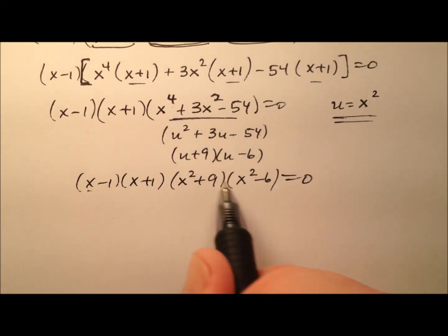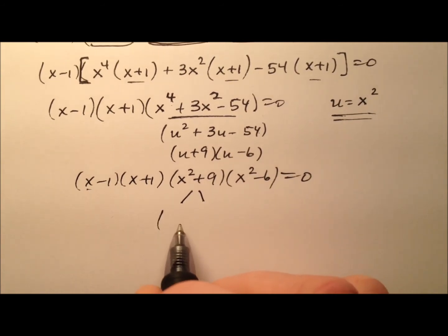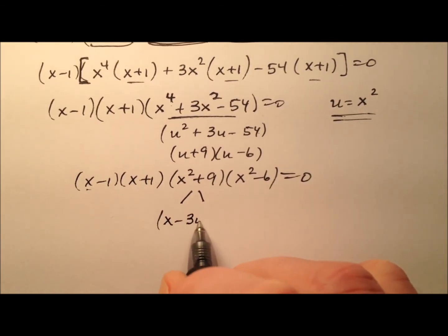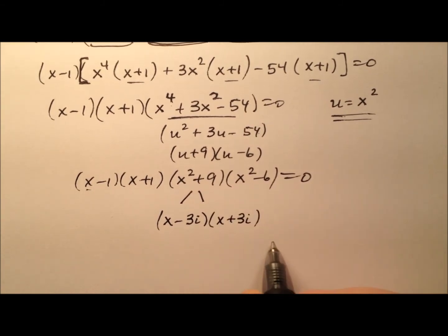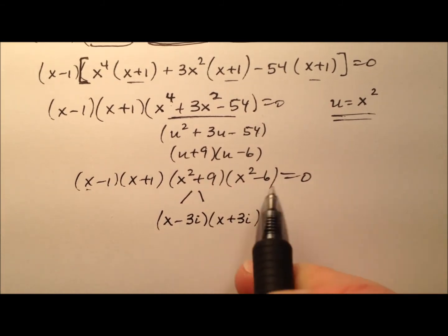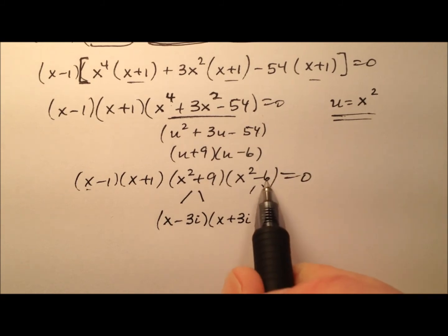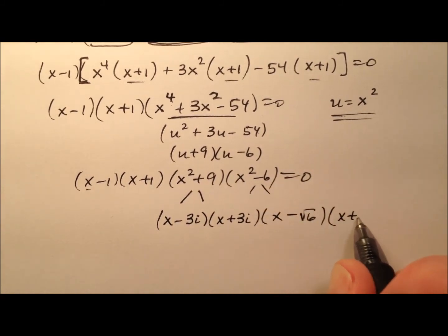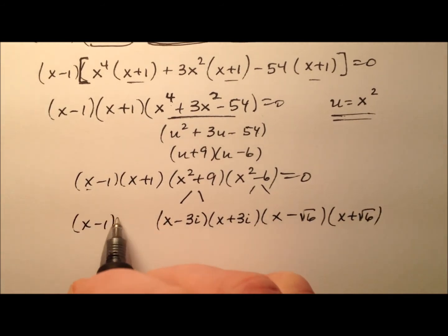I notice one factor is x squared plus 9 and the other is x squared minus 6. The x squared plus 9 is a sum of two perfect squares, so it factors over the complex numbers as (x minus 3i)(x plus 3i). And this difference of squares — well, 6 isn't a perfect square, but I can write it as (x minus the square root of 6)(x plus the square root of 6).